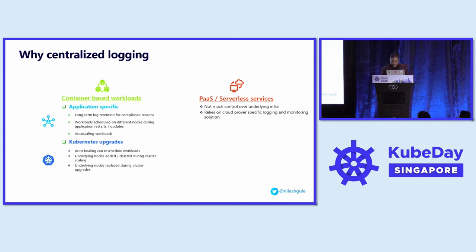These are some of the reasons why we need centralized logging. The 12-factor app concept — now upgraded to 15-factor apps — also recommends this as a best practice. It essentially says you should treat your logs as a stream rather than storing them physically on a machine, and as part of your infrastructure components, store them in a centralized location.